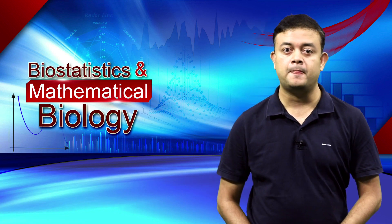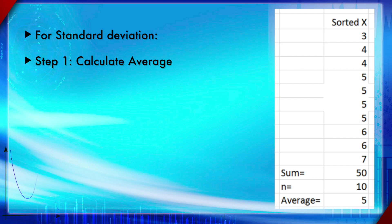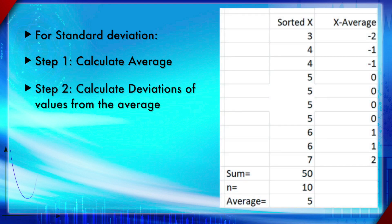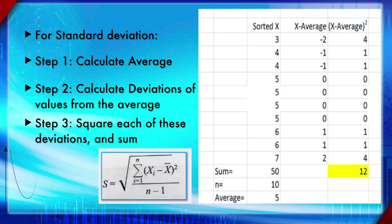Hello, module 10: moments, normality tests, and outliers. Section 1 is about moments. Remember how we calculated standard deviation: first we calculate the mean, then subtract the mean from each value to get deviations, then square those deviations and sum them, divide by n minus 1 to get the variance, and take the square root to get the standard deviation.